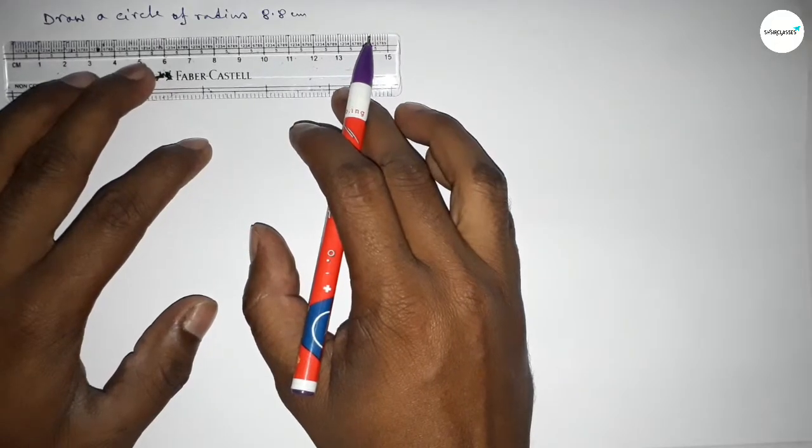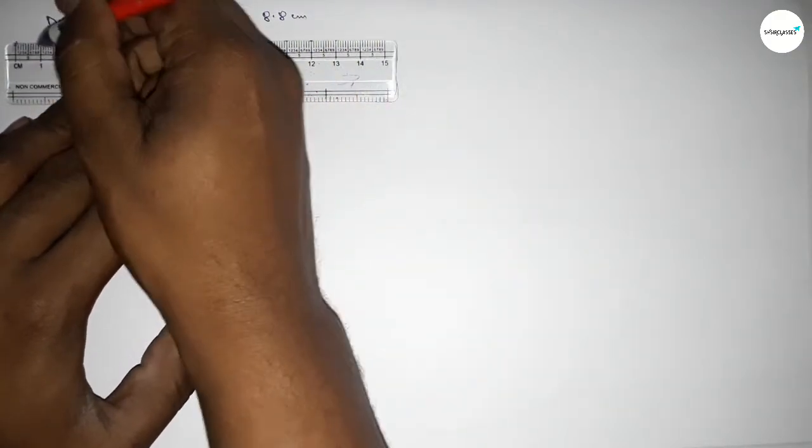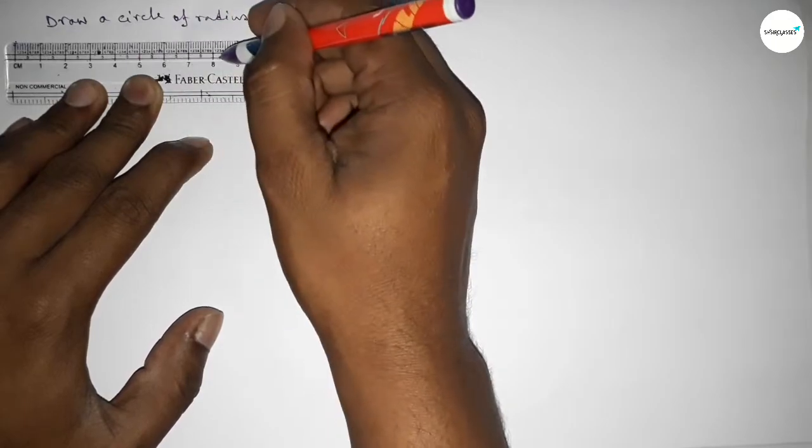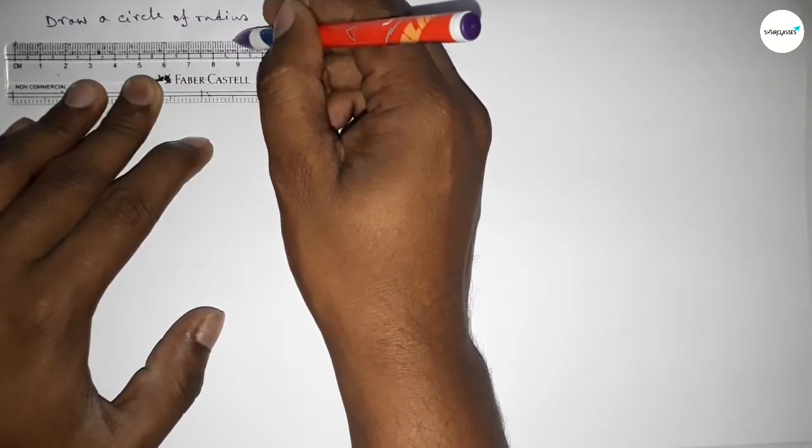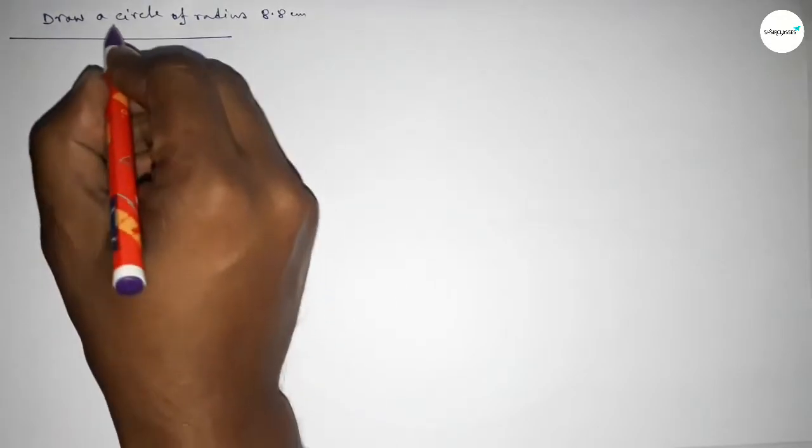So let's start the video. First of all, drawing here the radius 8.8 centimeter. So the starting 0, 1, 2, 3, 4, 5, 6, 7, 8 point 8. So this is 8.8 centimeter.